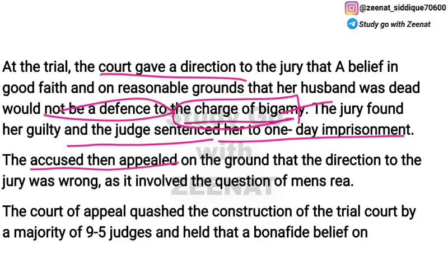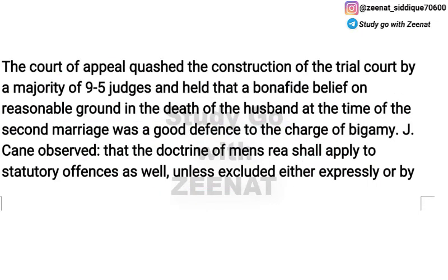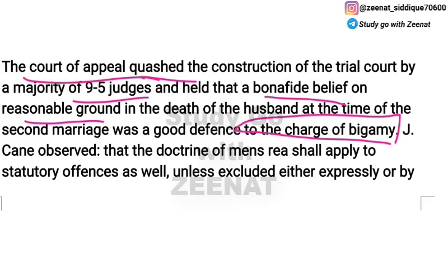Mrs. Tolson appealed this decision on the ground that the jury's direction was wrong, because the question of mens rea was involved. Her argument was: no act is a crime unless done with guilty intention, and she had no guilty intention. The trial court had completely ignored the question of mens rea. The Court of Appeal quashed the trial court's decision, with a 9-5 majority of judges.